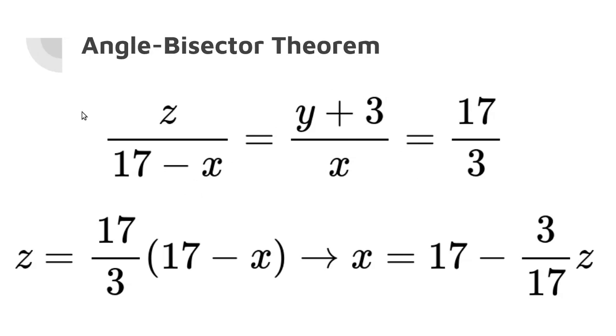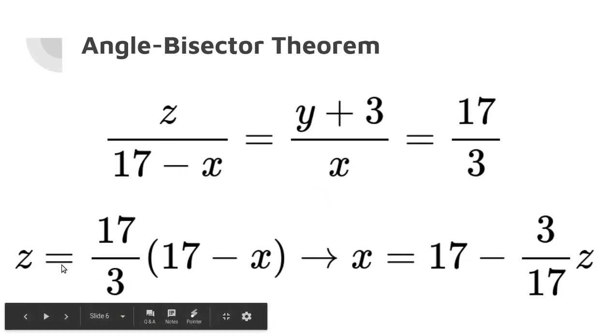So at this point, I'm going to ignore the middle here and just focus on the fact that Z over (17 minus X) equals 17 thirds. Then we can obviously solve for Z by multiplying by 17 minus X. So you get Z equals 17 thirds times (17 minus X). Now multiply by 3 seventeenths to get (17 minus X) equals 3 seventeenths Z, and then subtract both sides from 17 to get X equals 17 minus 3 seventeenths Z. Again, this equation on the right just comes from solving X on this equation from the left, and you can do that yourself in order to check that these two equations are equivalent. Now, after all this, we've used the angle bisector theorem to solve for X in terms of Z.